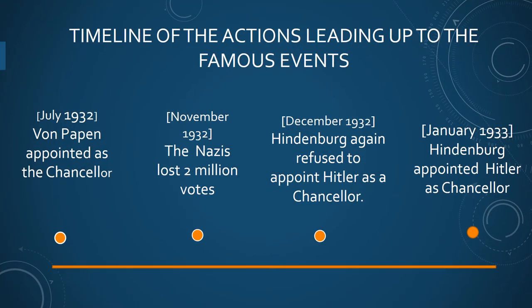Moving to our main focus today: the timeline of actions leading up to the famous events. First, July 1932 — von Papen was appointed as Chancellor. The Nazis were the largest single party with 230 seats but did not have an overall majority. Hitler demanded the post of Chancellor, but Hindenburg was suspicious of Hitler and refused to give him that position. He chose Franz von Papen to become Chancellor. Hindenburg thought that von Papen could solve the unemployment problems, but soon he was proved wrong because Franz von Papen did not have support from the Reichstag.